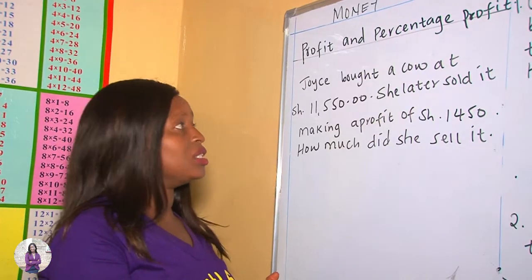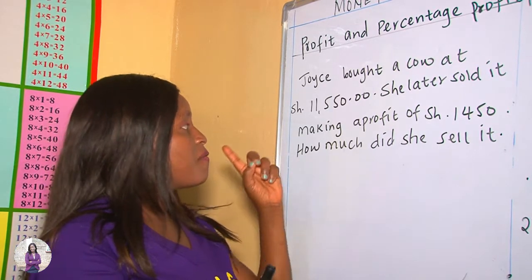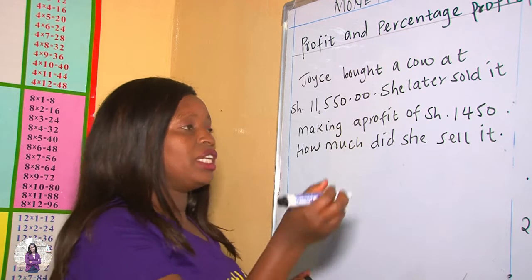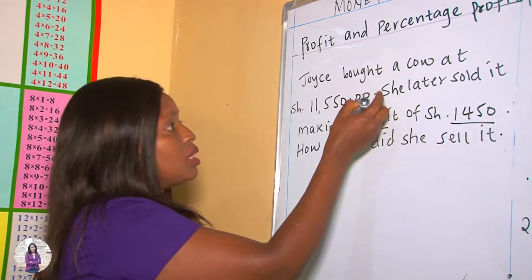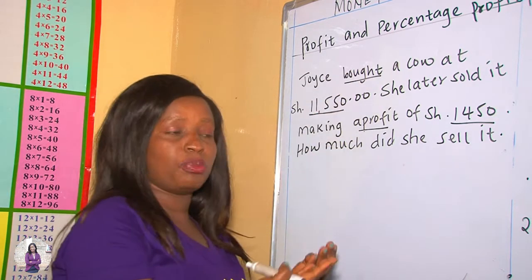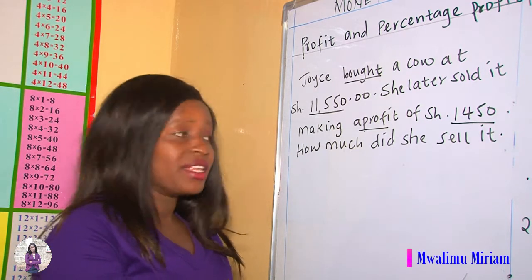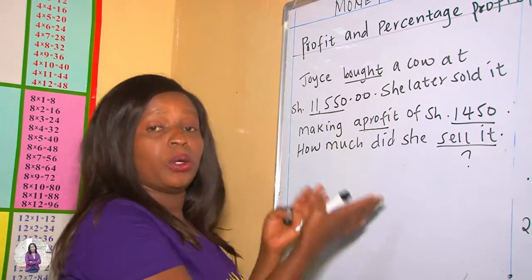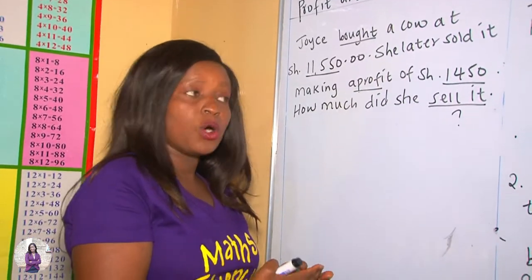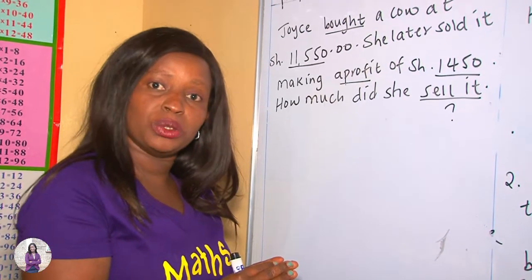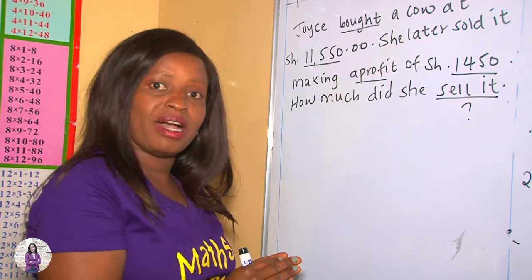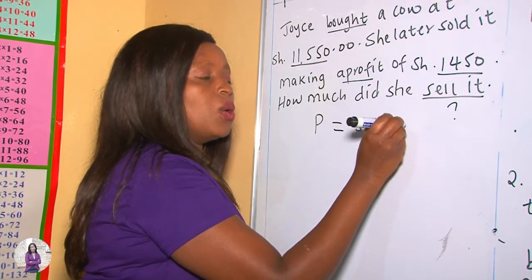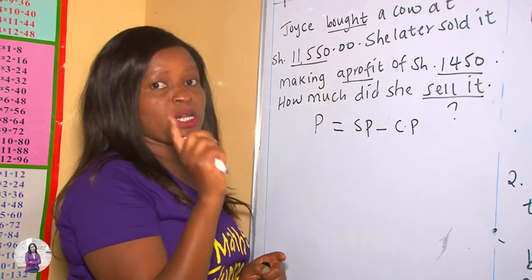In this example, we are told that Juma bought a cow at 11,550 shillings and sold it making a profit of 1,450 shillings. Take note: we know the profit and we know the buying price, which is the cost price. What is unknown is the selling price — we are looking for the selling price. In such a question, you need to know what you are given and what you are looking for. We use the formula: profit equals selling price take away cost price. We let the unknown selling price equal X.